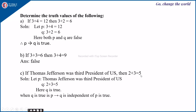The next one: if Thomas Jefferson was the third president of the US, then 2 plus 3 is equal to 5. Now p is 'Thomas Jefferson was the third president of the US' and q is '2 plus 3 is 5'. Since 2 plus 3 equals 5 is true, q is true. When q is true, p implies q is true independent of p.